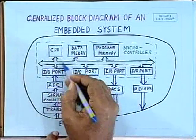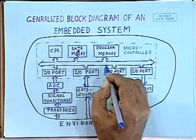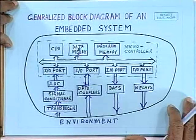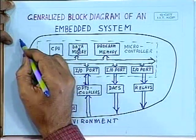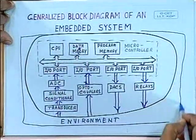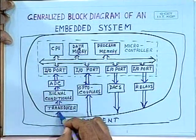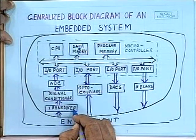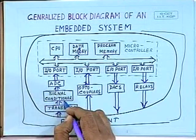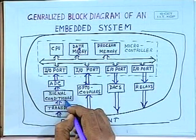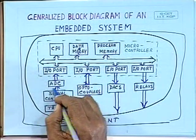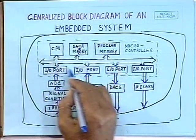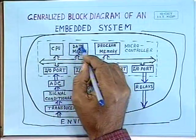Here is your microcomputer — you have got a CPU, data memory, program memory, and a number of IO ports. This forms your microcontroller. In addition to this, you require some other devices. From the environment, the system must get information about physical parameters, and for that purpose you will require suitable transducers. One or more transducers will be required, and the output of the transducers will be fed to a signal conditioner, and from there to an analog-to-digital converter, which will generate digital data to be read through an IO port and stored in data memory.